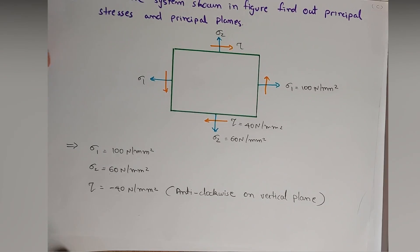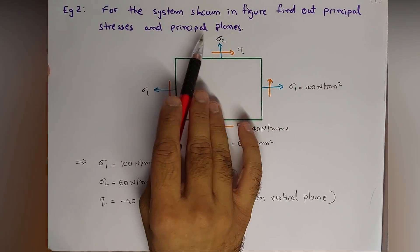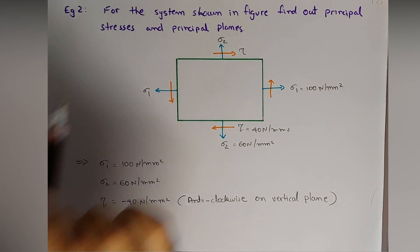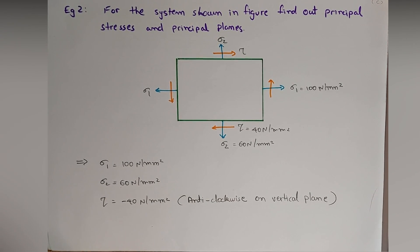Finding angles alpha 1 and alpha 2 gives the location of the principal planes. Friends, this is all for today. Wait for the ninth part of the topic 'Principal Stresses and Principal Planes,' where we will continue with example number three. Thank you for watching.